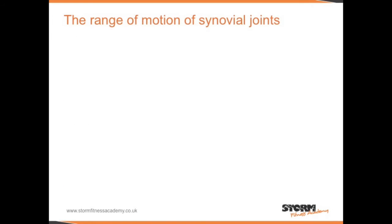The ellipsoid joint is where two bones meet — one has a convex surface and one has a concave surface. Synovial joints have a big range of motion, and each joint has its own specific range. There is different terminology used when describing the joint movement potential found in a particular joint.